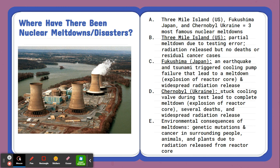Now what happened at Three Mile Island wasn't necessarily a large disaster like our Fukushima or Chernobyl. However, it was the greatest nuclear disaster in U.S. history. We saw a partial meltdown due to a testing error. There was some radiation that was released, but no deaths or residual cancer has been found.